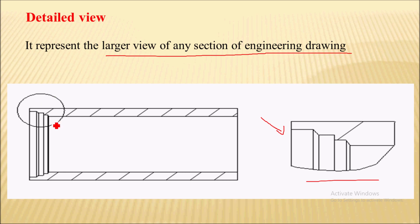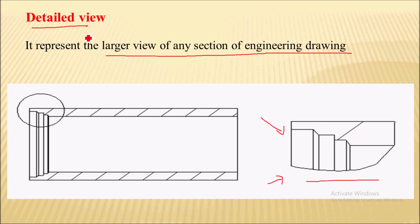A detailed view is essentially the enlarged view of a particular section of an engineering drawing, in which dimensions can easily be given. This is called the detailed view.